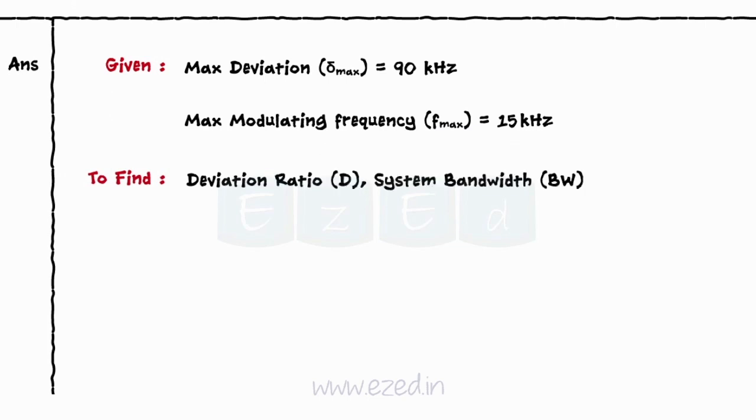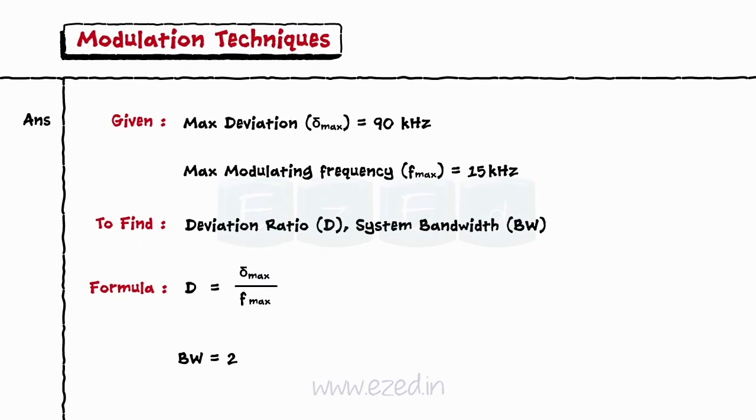For that, we use the formulae d equals delta max upon f max and bandwidth equals 2 into max deviation plus max frequency.